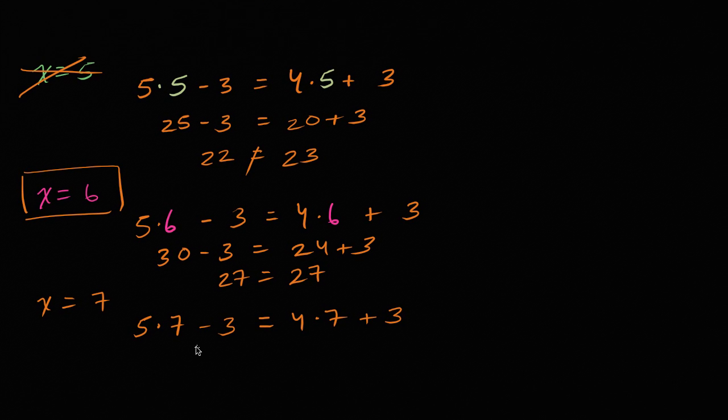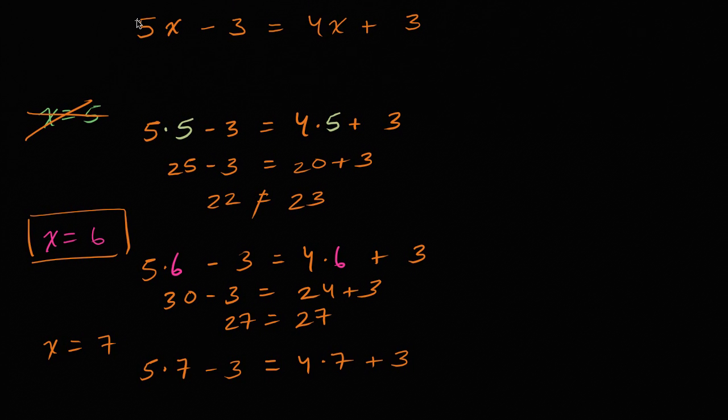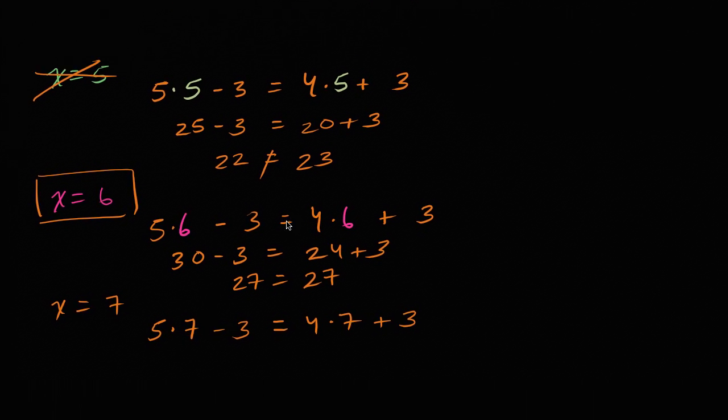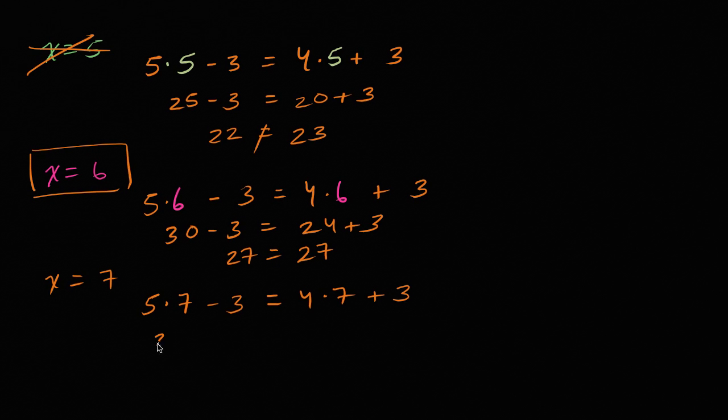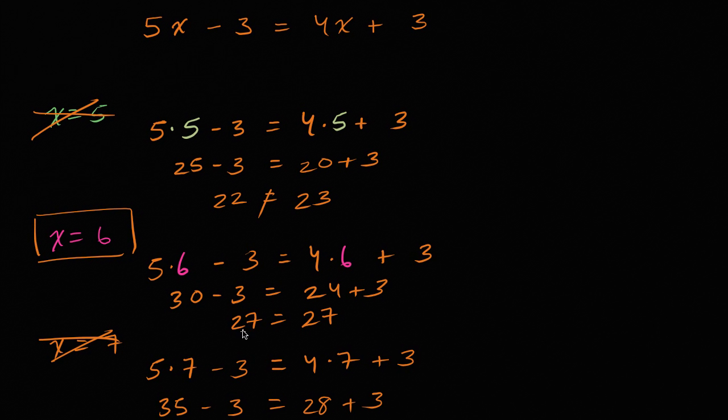And so in all of these cases, we do the multiplication first, order of operations, and it's very clear when you see it in the algebraic notation up here. So we're going to do thirty-five minus three needs to be equal to twenty-eight plus three. Thirty-five minus three is thirty-two. Twenty-eight plus three is thirty-one. These do not equal each other. So this is not a solution to our original equation.